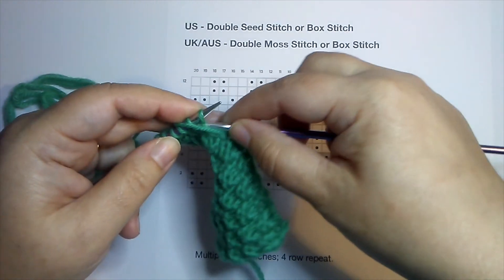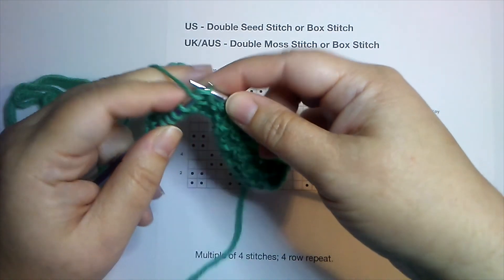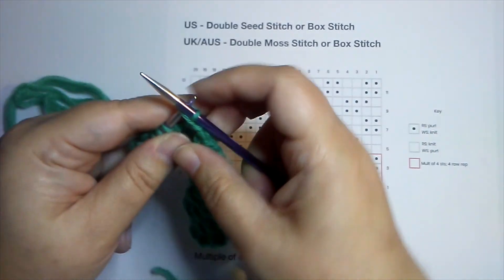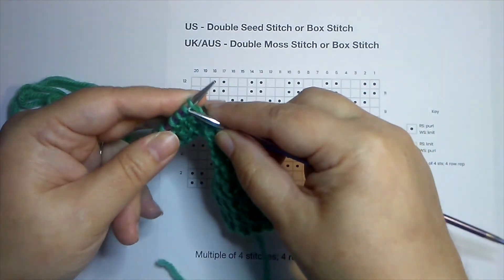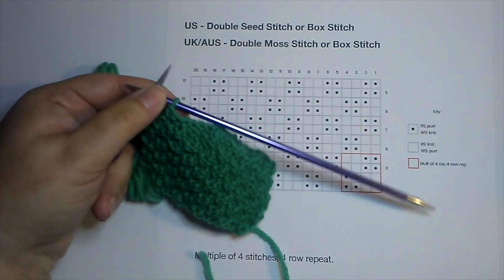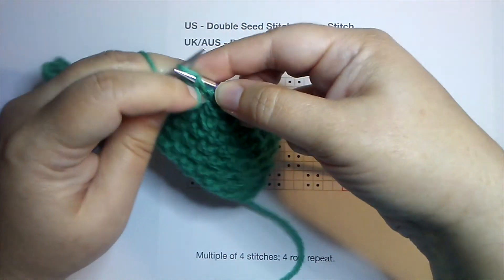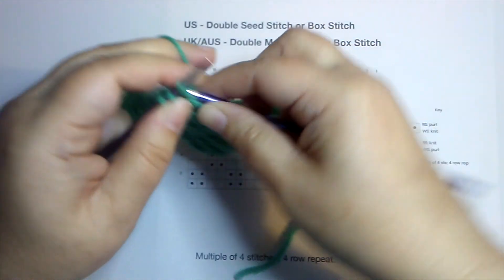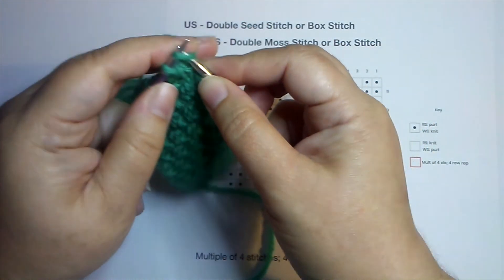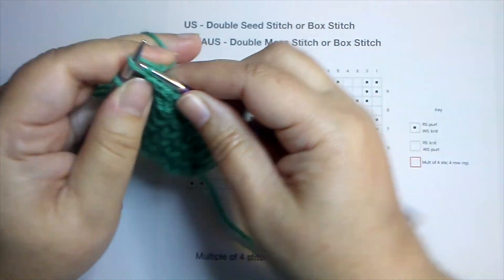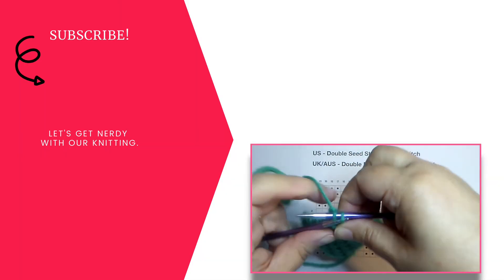So go ahead and click over after we're done binding off here and you can watch that video. Next I've got a purl stitch, so I will purl it and bind it off. So as you can see, binding off in pattern doesn't have to be difficult. And if you like to get a bit nerdy with your knitting, be sure to click the subscribe button down below. There are the final few stitches and we have bound off in pattern.